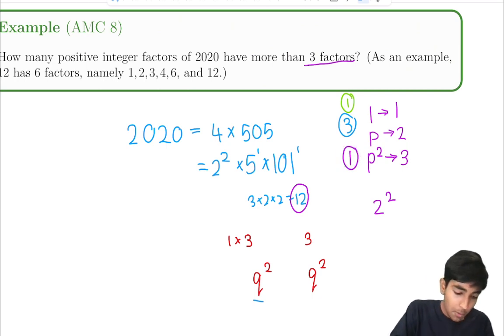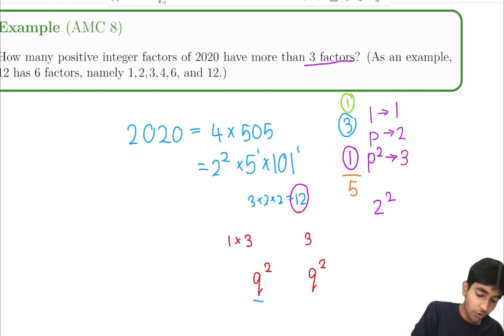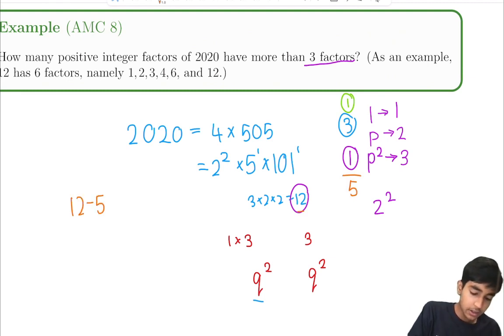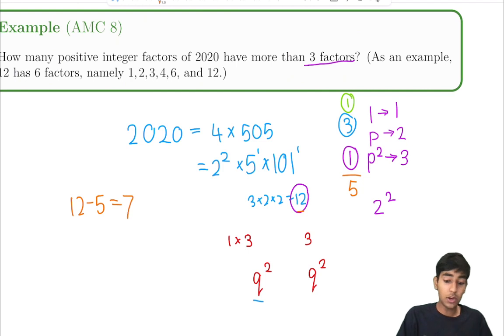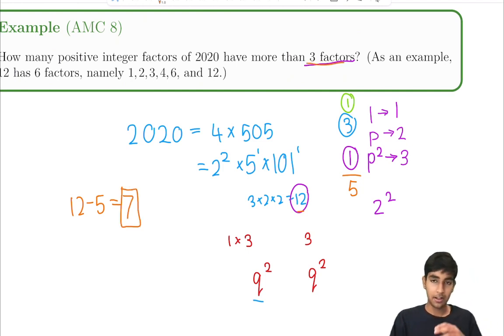Overall we have 5 factors that don't work (1 factor with 1 factor, 3 primes, and 1 prime square), and 12 total factors. So 12 minus 5 equals 7 factors of 2020 that have more than 3 factors. That is our answer: 7.